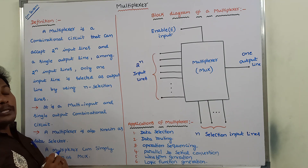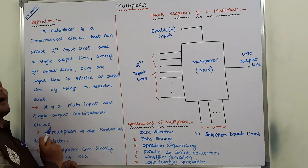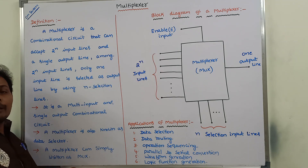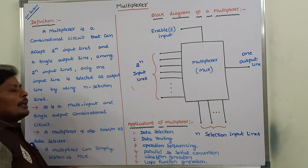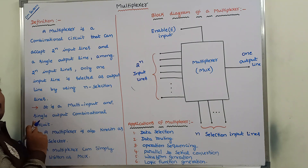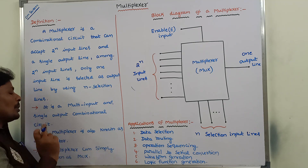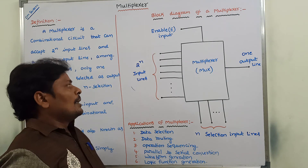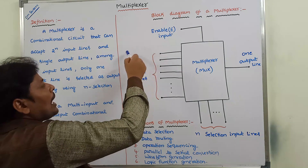A multiplexer can also be called a multi-input and single-output combinational circuit. There are 2^n number of input lines, hence we say multi-input, and it can produce only one output line. So a multiplexer can be treated as a multi-input and single-output combinational circuit.